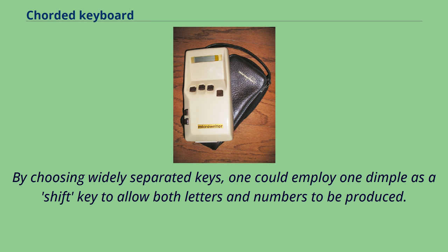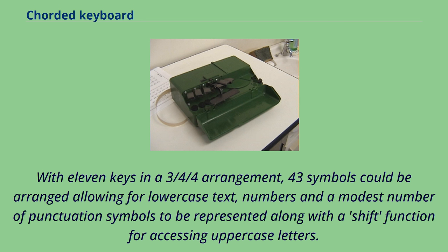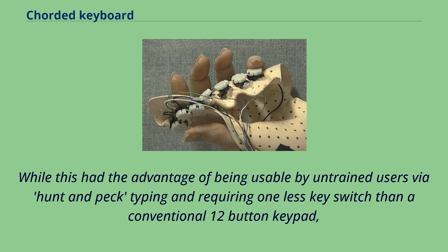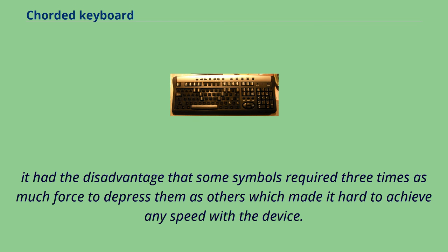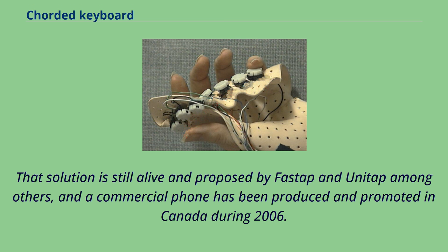By choosing widely separated keys, one could employ one dimple as a shift key to allow both letters and numbers. With 11 keys in a 3-4-4 arrangement, 43 symbols could be arranged allowing for lowercase text, numbers, punctuation, and a shift function for uppercase letters. While this had the advantage of being usable by untrained users via hunt-and-peck typing, it had the disadvantage that some symbols required three times as much force as others, making speed difficult. That solution is still alive, proposed by FastApp and UnitApp among others, and a commercial phone was produced and promoted in Canada during 2006.